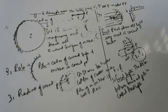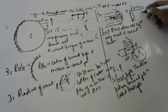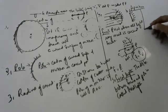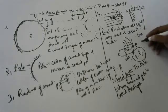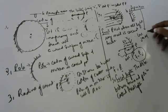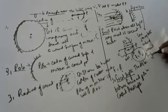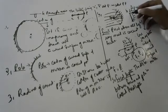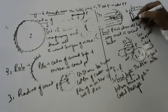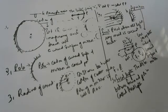In mathematics we call it a chord, but here we call it aperture. The aperture is the line joining both ends of the curved surface of the mirror.